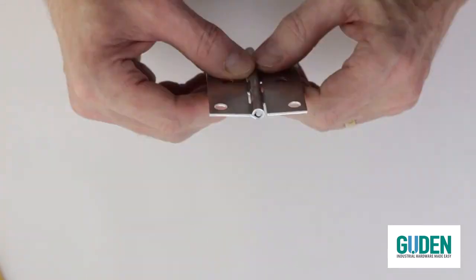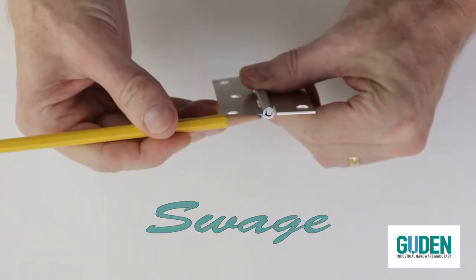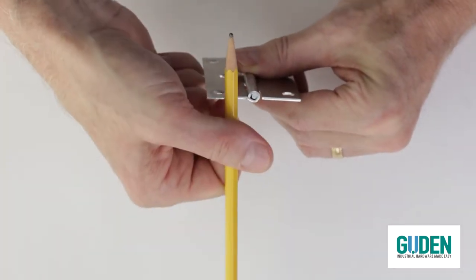The next thing I want to talk about is swaging. Swedge has an interesting spelling - it's spelled S-W-A-G-E, but everybody pronounces it swedge. It's where you press the leaf toward the pin, so that would be in this direction.